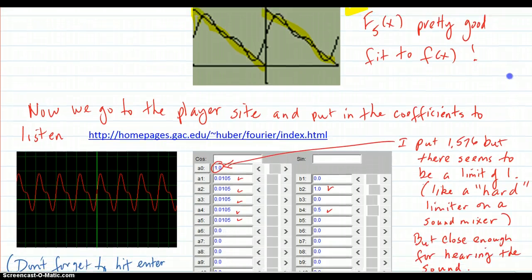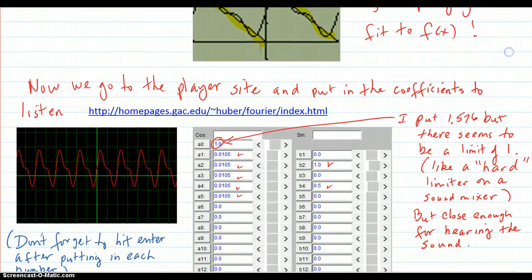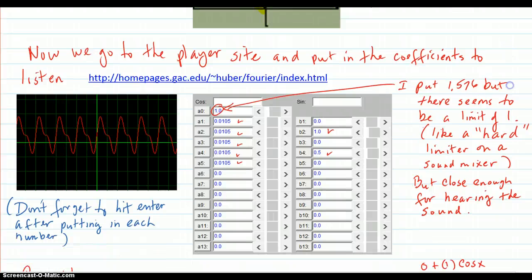Now we're going to go to the player site and put in the coefficients to listen. So we go to that site that we have on the worksheet in the previous video. And I put in 1.576 into here. But it chopped it off to 1. So evidently 1 or maybe negative 1 is the highest and lowest it can go.